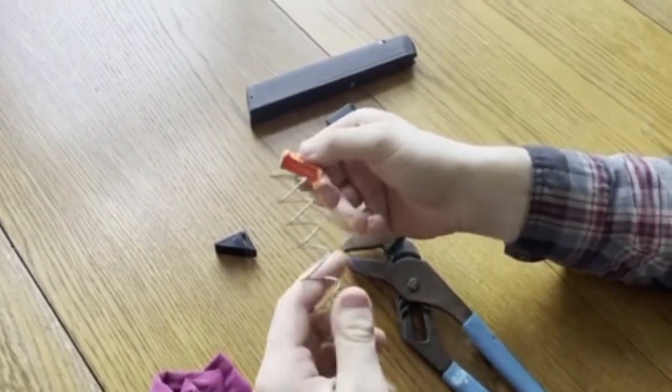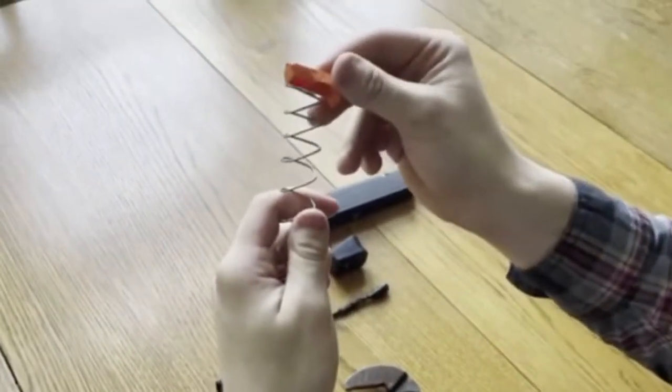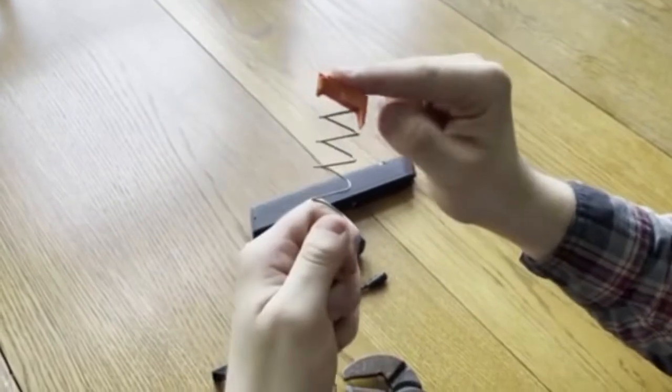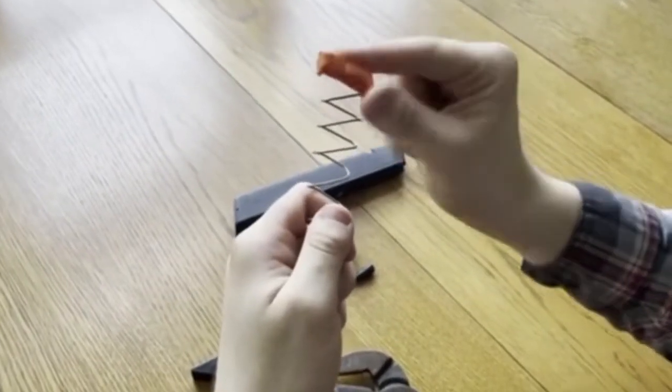Place your spring inside the follower like this, so that's aimed upwards with the tail towards this side.